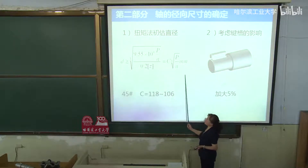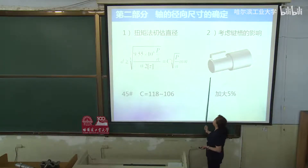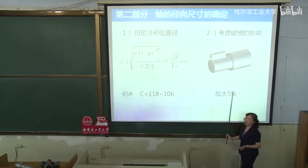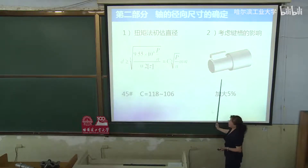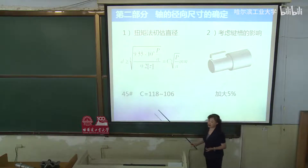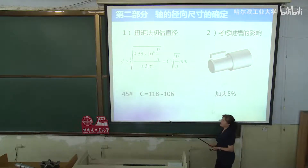举个简单例子：按扭矩法初估D ≥ 16.8，考虑键槽影响（单键），加大5%后约为18点多，就可以选20。从强度角度选20足够了，但还不行，我们再往下看为什么。